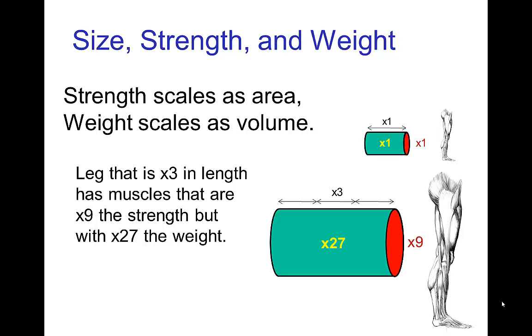So in this example, if we have a small leg and a large leg, the leg that's three times longer has muscles that are nine times stronger. However, that leg weighs 27 times more than the small one.